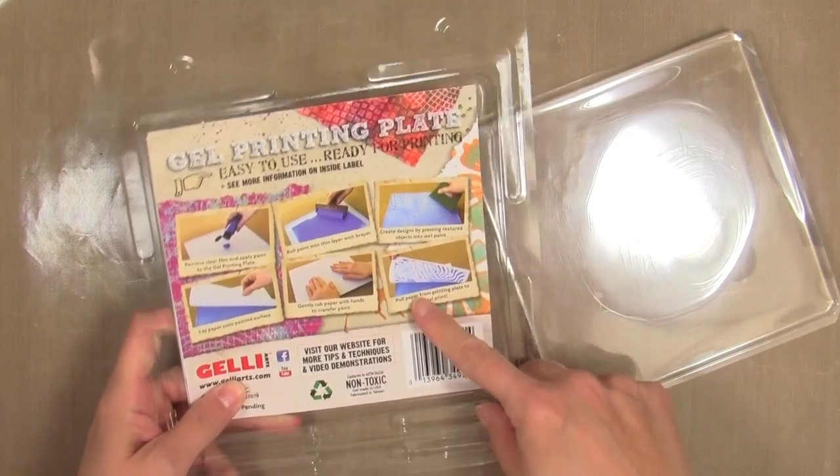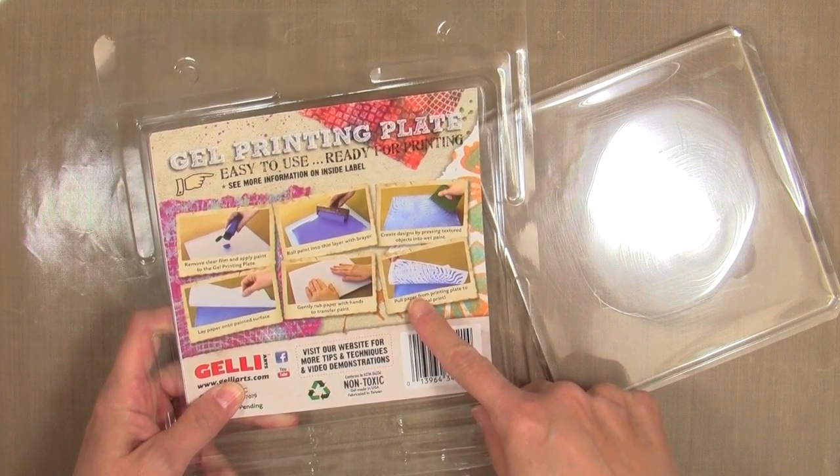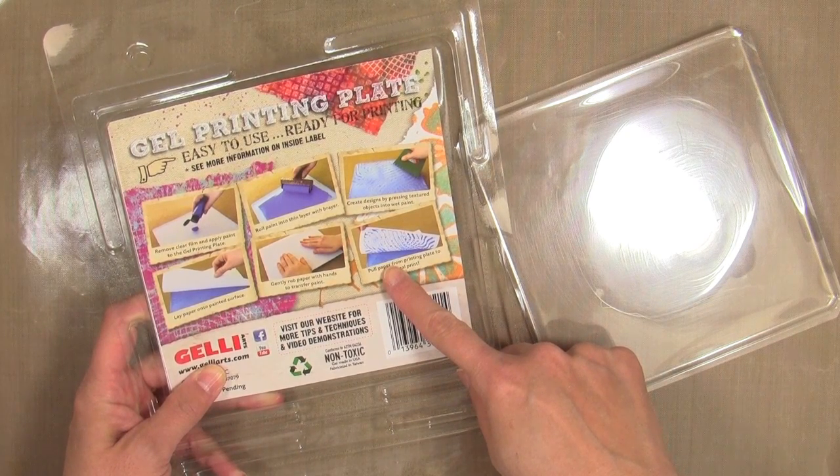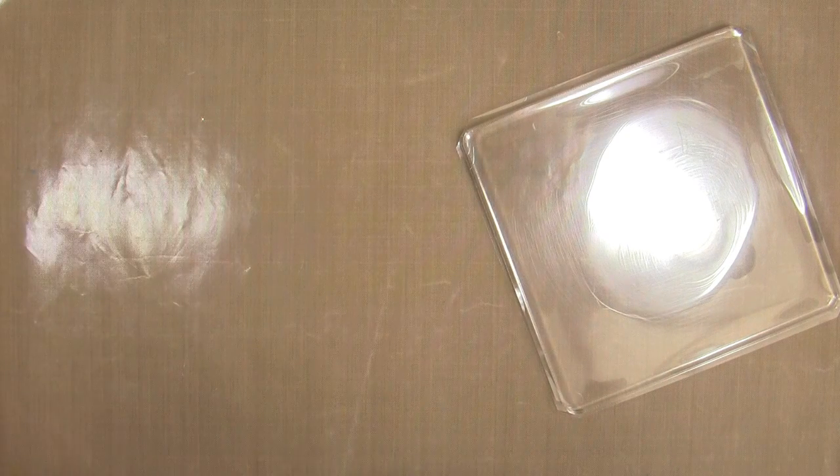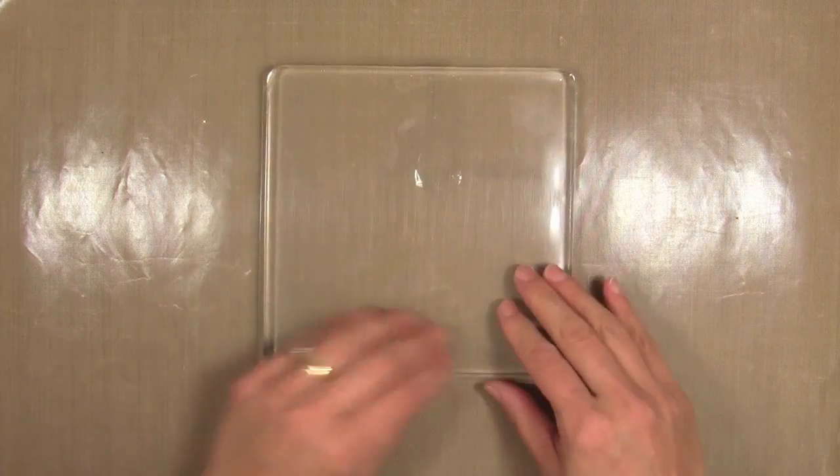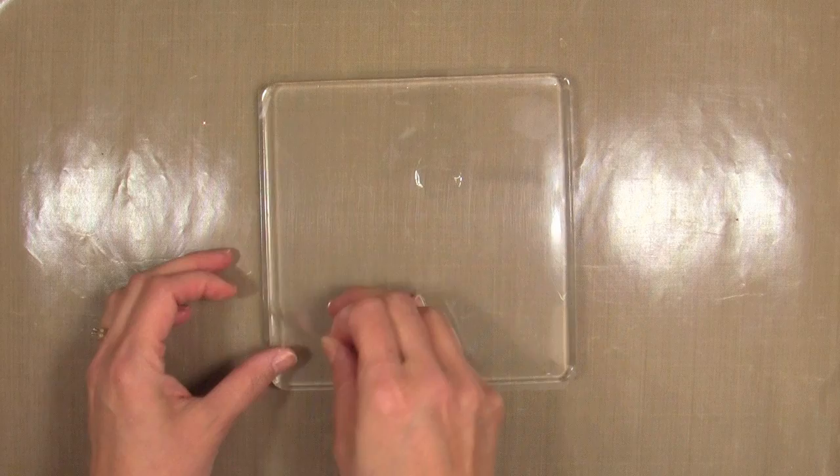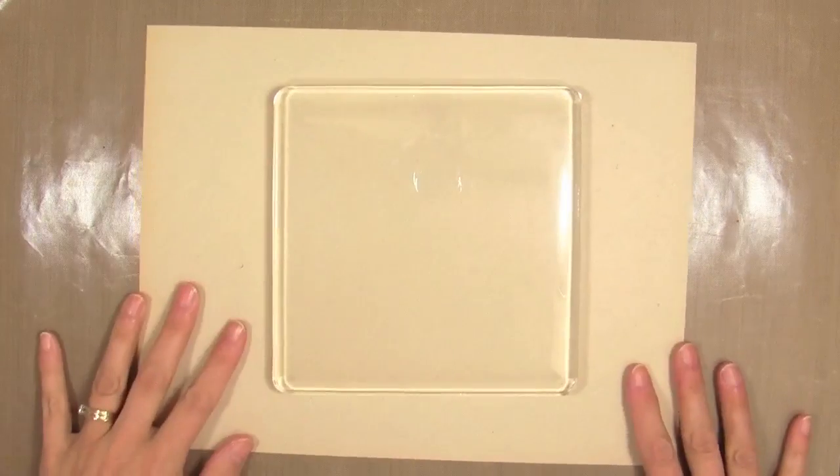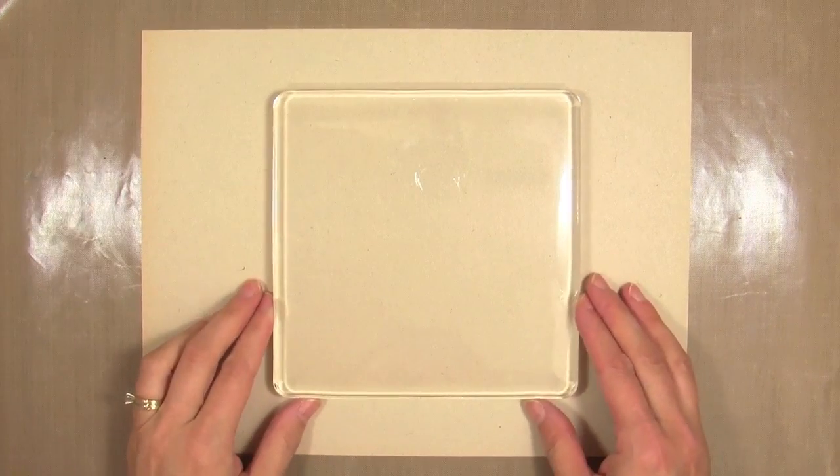It comes with great packaging that's perfect for storage, so don't throw any of it away. They've got a brochure and the clamshell is perfect for storing your jelly plate. It also comes with two sheets of acetate. You always want to keep it on a non-porous surface like these acetate pieces. I'm going to peel off the top layer and set it aside for later when I'm ready to put my plate away, but I need to remove that in order to start applying mediums to the surface.